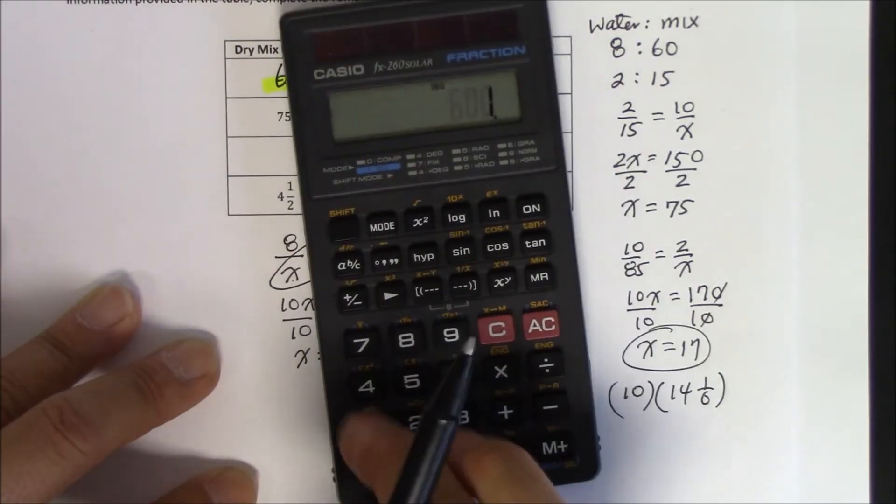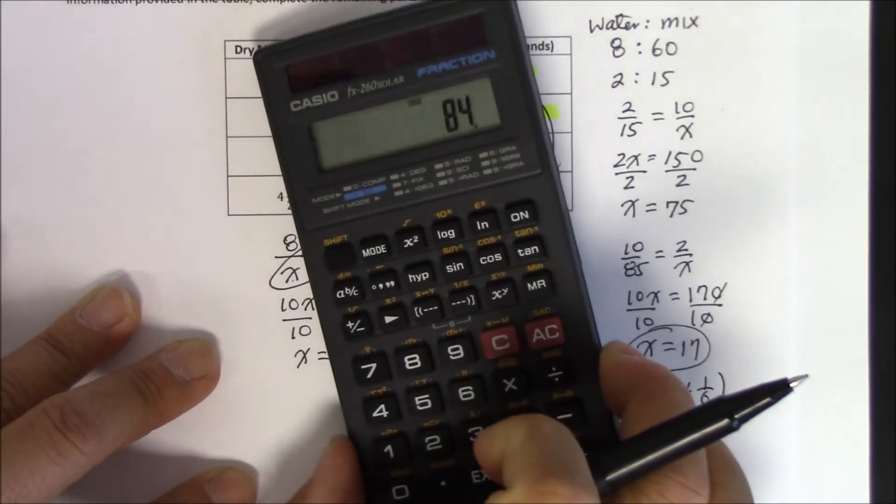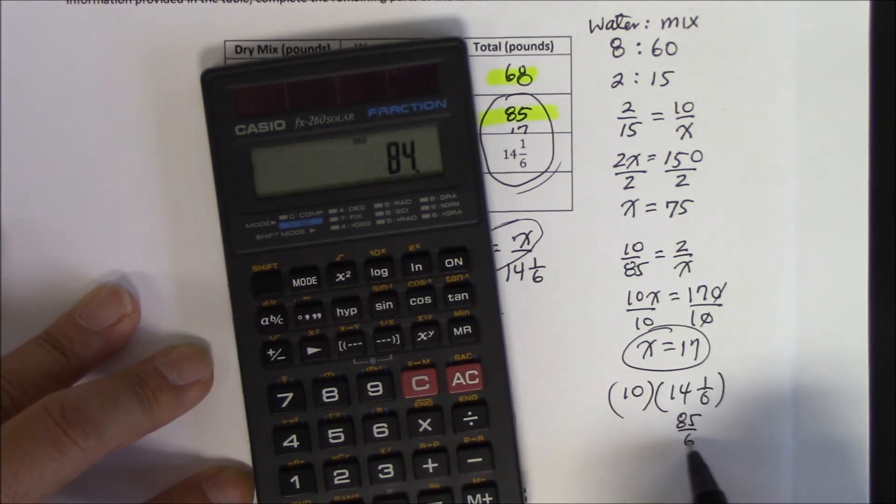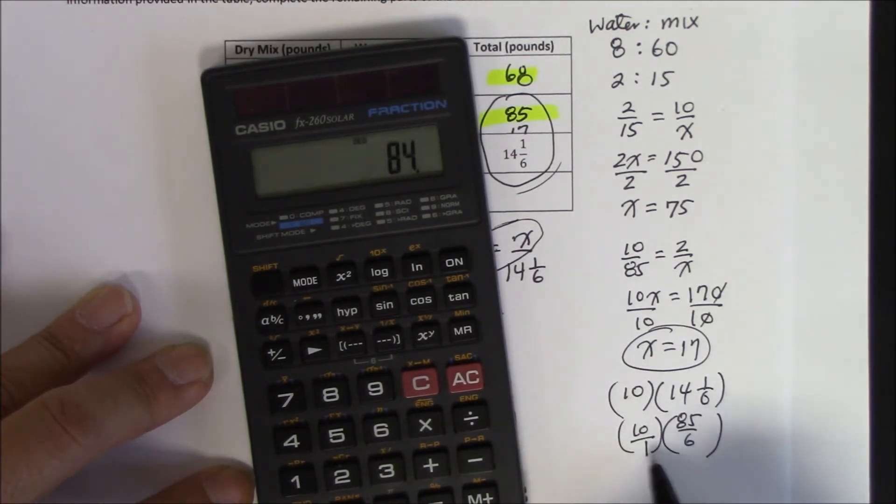And 84 plus the numerator is going to become 85 over 6. And let's go ahead and cross multiply. Let's put a 1 underneath this thing. Now 6 does not go into 10 evenly, but there is a common factor between them, which is 2. 2 goes into 6 three times. 2 goes into 10 five times. Phew!